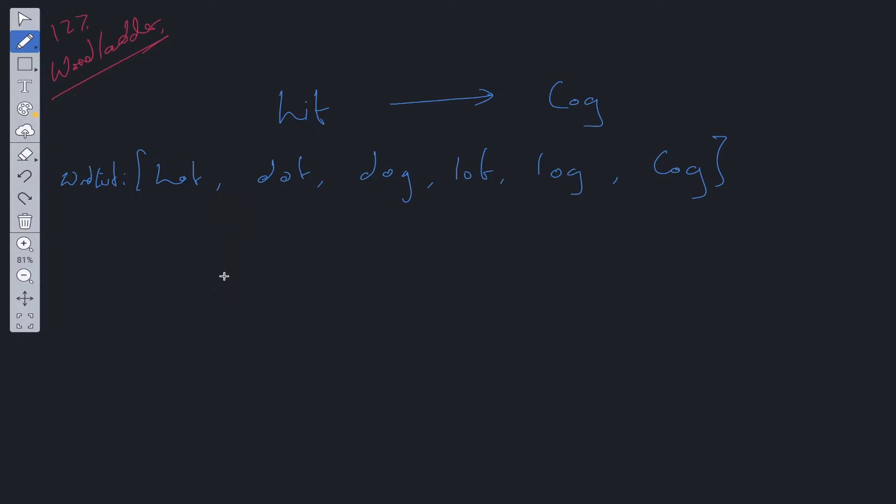Because this question is asking for the shortest transformation sequence that would suggest to use breadth first search which means we will be using a queue. For this solution we need to convert the words list which is an array to a set. The reason for that is it has O(1) lookup. We're going to have a set and it's going to contain all of these values.